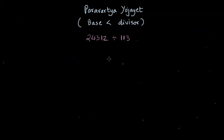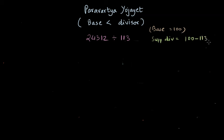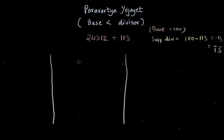Now let us take a different example to learn a new concept with a different base. We have 24,312 divided by 113. Here the base is 100. So the supplement divisor is 100 minus 113, which is minus 13. We write it as bar over 1 and bar over 3. We write the divisor 113 on the leftmost side, and below it the supplement divisor: bar one and bar three, meaning minus one and minus three.